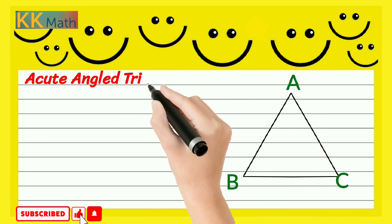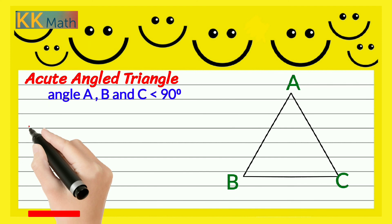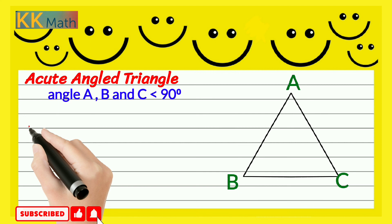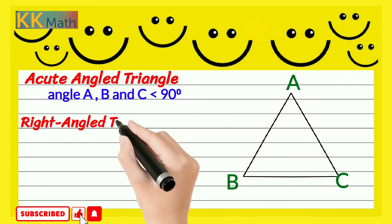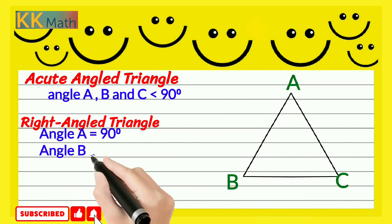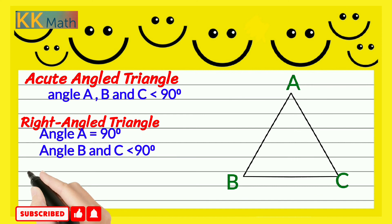Acute angle triangle: a triangle that has all three angles less than 90 degrees is an acute angle triangle, so all the angles of an acute angle triangle are called acute angles. Right angle triangle: a triangle that has one angle that measures exactly 90 degrees is a right angle triangle. The other two angles of a right angle triangle are acute angles.